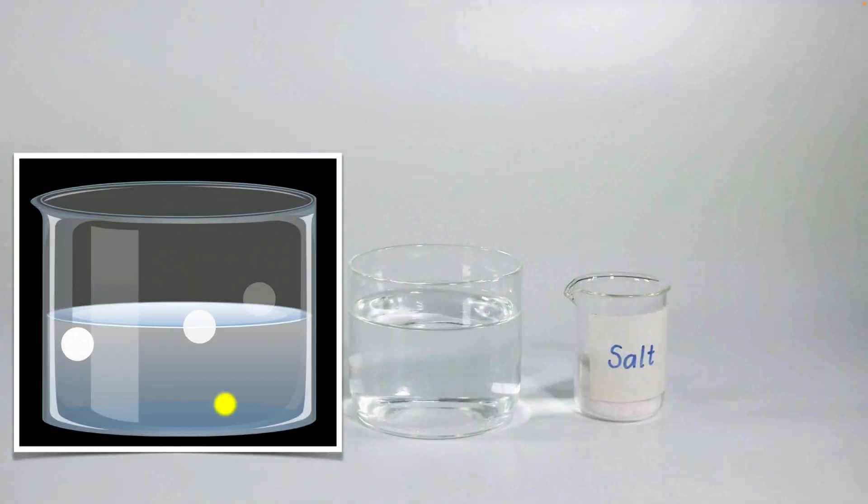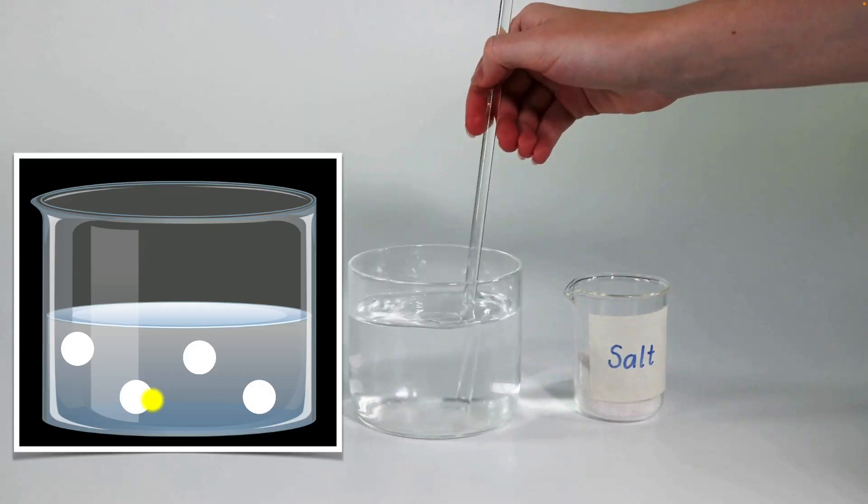So when you add salt to water, we say the salt gets dissolved. What really happens over here is that the salt particles actually break into tiny charged particles. Can you see that? Positive and negative particles. This is the reason why when I put wires and get up to a battery and a bulb, it conducts electricity and the bulb glows because you have charges over here.